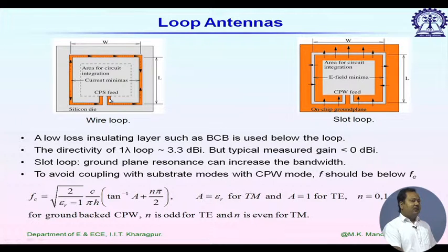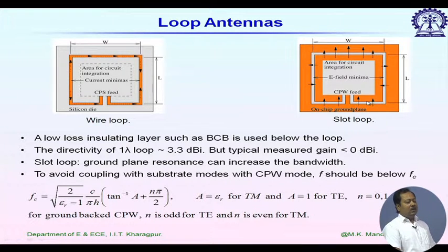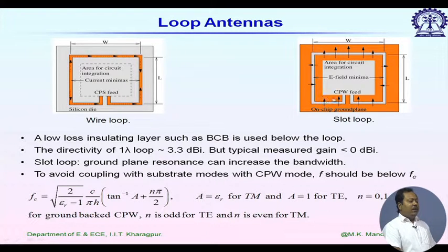We may also have complementary structures. On the left is a wire loop fed by a coplanar strip line, and its dual structure on the right is a slot loop with almost similar characteristics. For the slot loop we can use a CPW feed line. An advantage of the right-hand figure is that the outside ground plane is very narrow and can be used as a second radiator, forming two coupled resonating structures, which increases bandwidth. This technique is very common for bandwidth improvement.